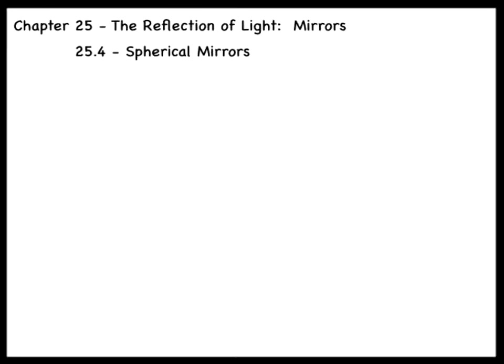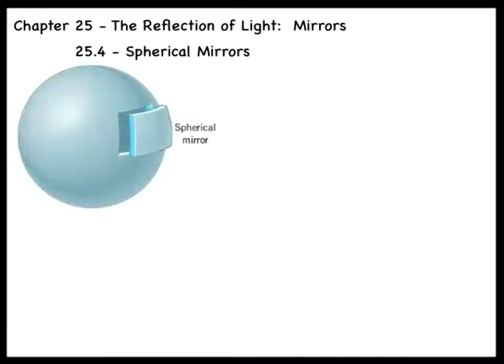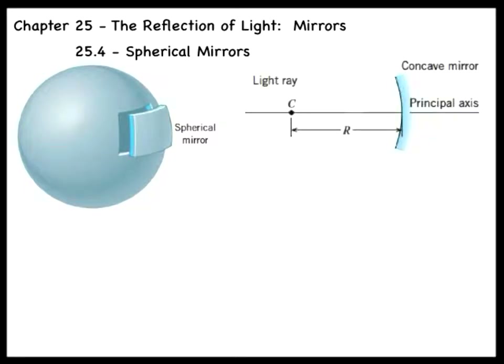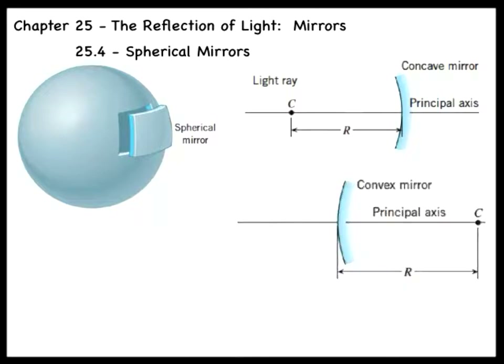Now we want to curve the surface of the mirror so that it is no longer flat. The most common type of curved mirror is a spherical mirror. Imagine cutting out a small section of a spherical shell, as shown in the figure. There are two types of spherical mirrors we can make, depending on which surface we polish to produce specular reflections. If we polish the inside surface, we create a concave spherical mirror. If we polish the outside surface, we create a convex spherical mirror.